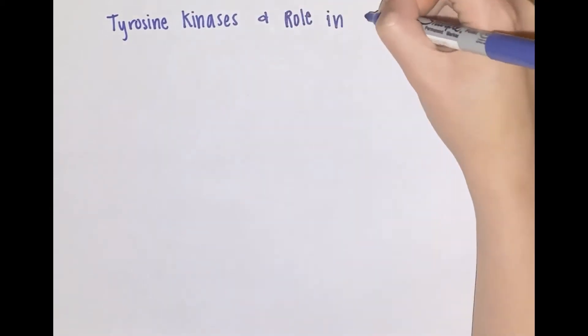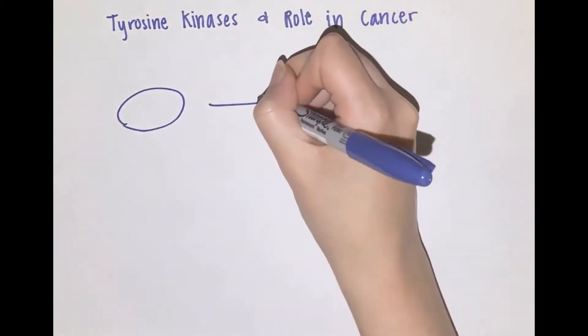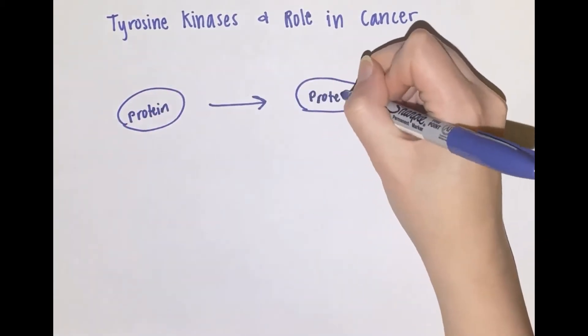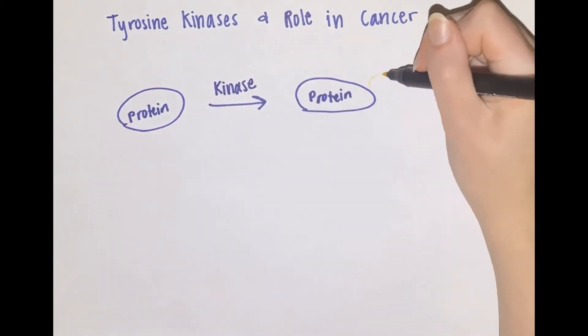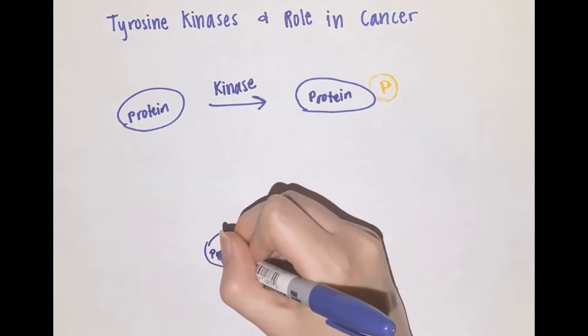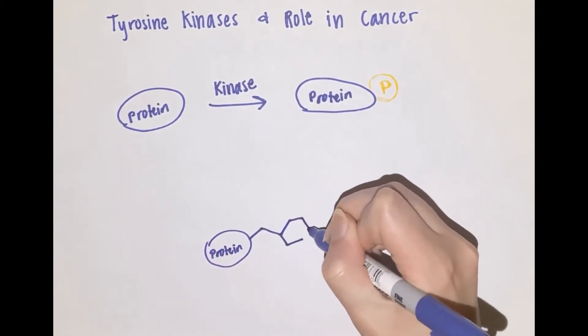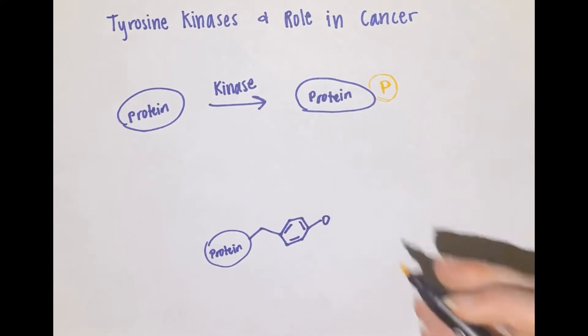Kinases are enzymes that catalyze the transfer of a phosphate from ATP to a molecule, typically a protein that either gets activated or deactivated. A tyrosine kinase will phosphorylate a tyrosine residue on a protein through a covalent catalysis mechanism.